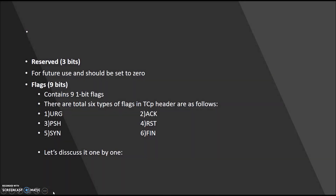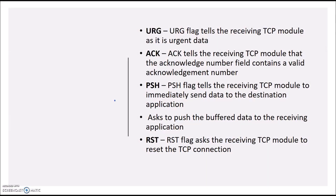Let's discuss all these flags one by one. First, the urgent flag tells the receiver that the data being sent is urgent, or some part of the data is to be sent using the urgent pointer. Next is ACK — acknowledgement — which tells the receiver that the acknowledgement number field contains a valid acknowledgement number. In acknowledgement, there will be a two-way handshake, which will be explained later in the video.